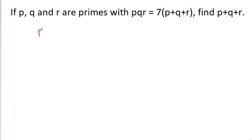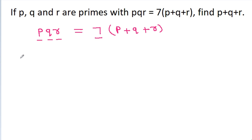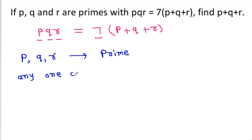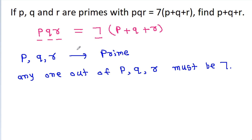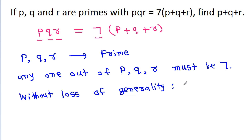We have given that pqr is equal to 7 times p plus q plus r, and p, q, r are primes, and 7 is also prime. That means anyone out of p, q, and r must be 7. Since the equation is symmetric with respect to p, q, and r, without loss of generality, we can assume p is equal to 7.